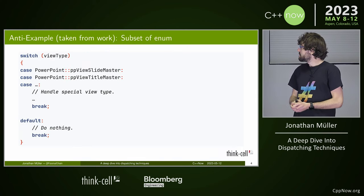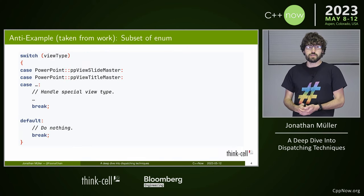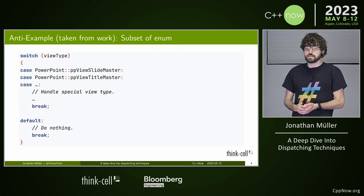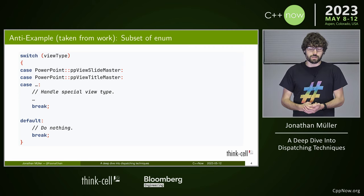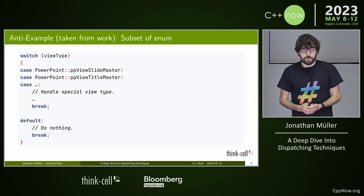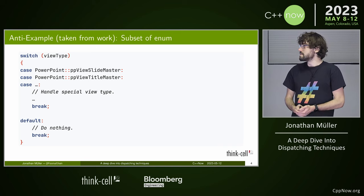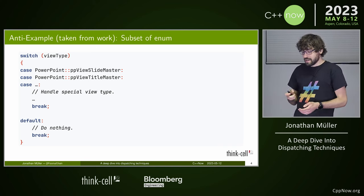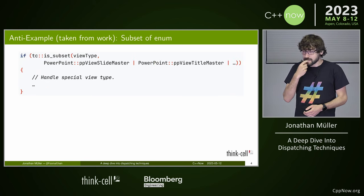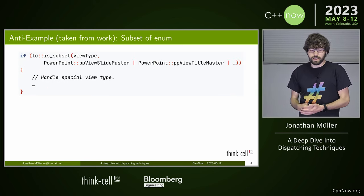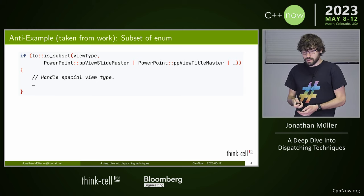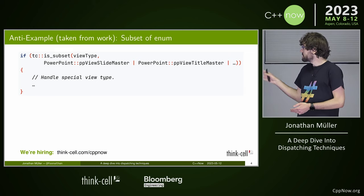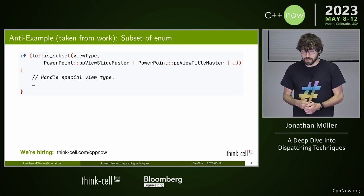This is an example taken from work — we do a PowerPoint plugin, so we need to do a lot of PowerPoint stuff. In this case, we want to handle the slide master especially, so we have a switch to do that, then a default. You should write that something like using an enum set, asking for a subset. I'll also use this opportunity to mention that we're hiring.